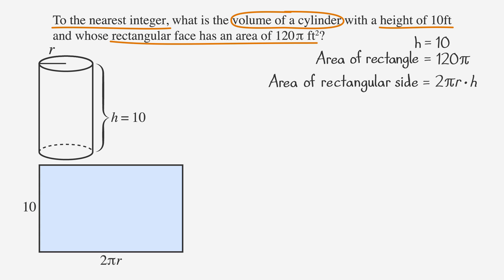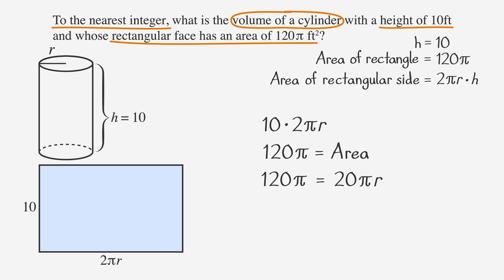So because we know that the height is 10, our equation becomes 10 times 2 pi r. And since we're told that the area of the rectangular side is 120 pi, we can say that 120 pi is equal to 20 pi r. We want to simplify by dividing both sides by 20 times pi, and we get that 6 equals r. Okay, we're almost done.